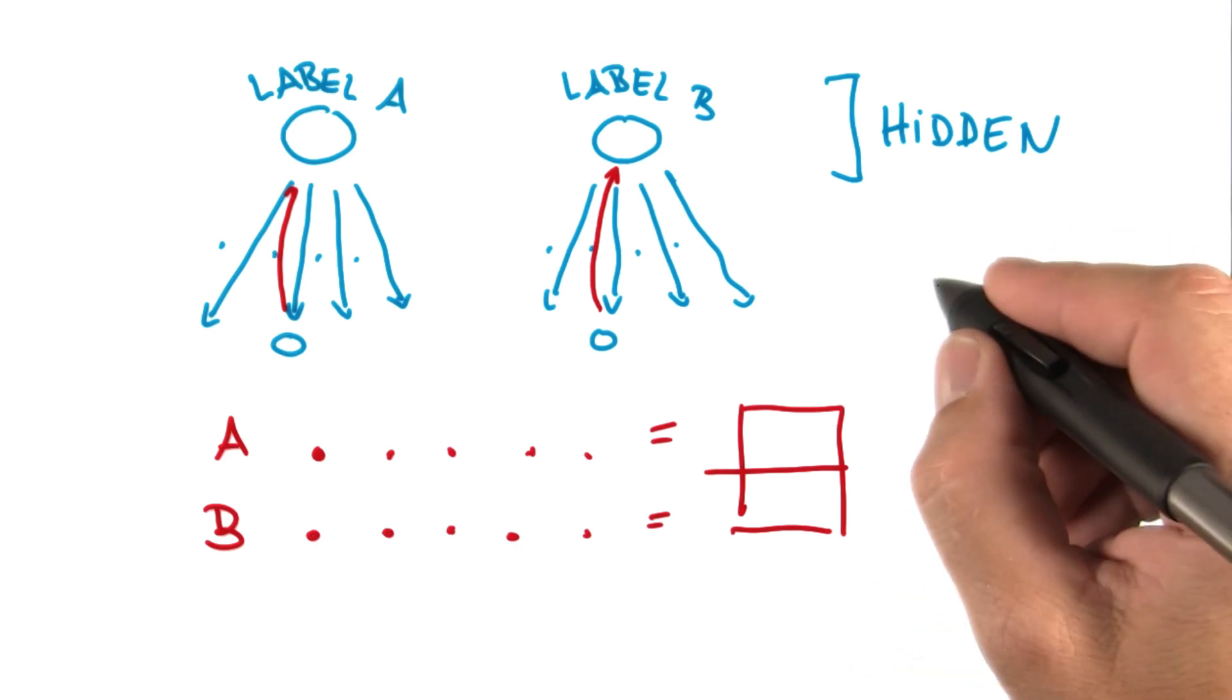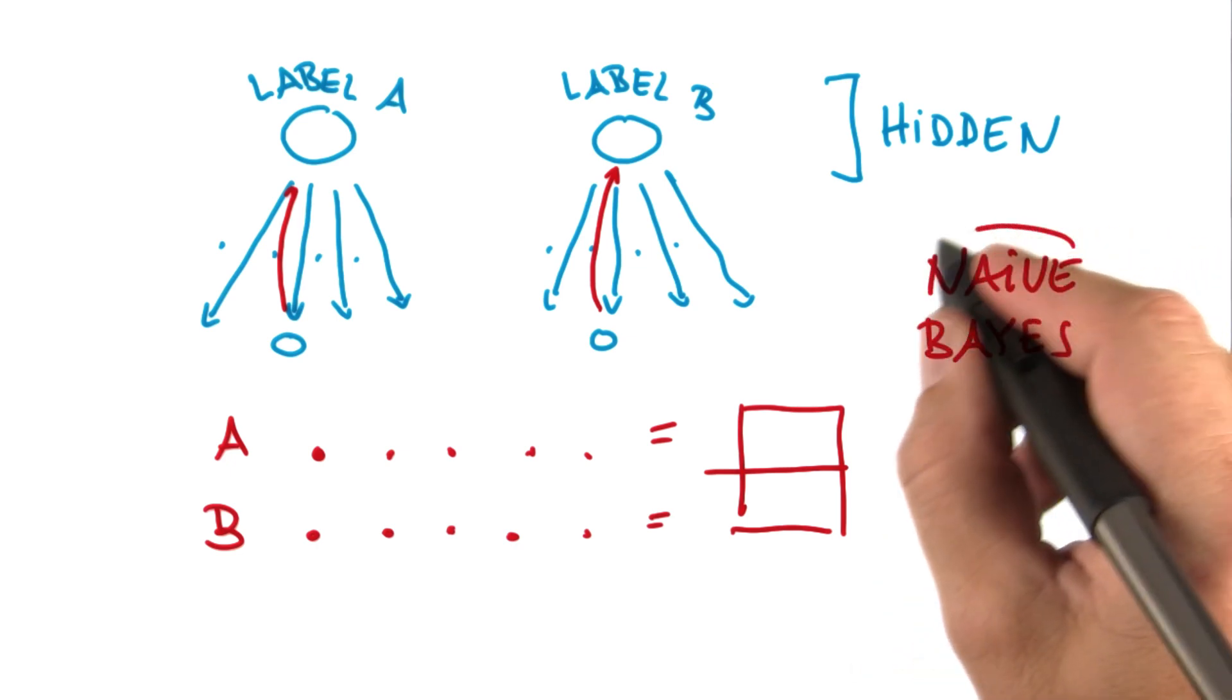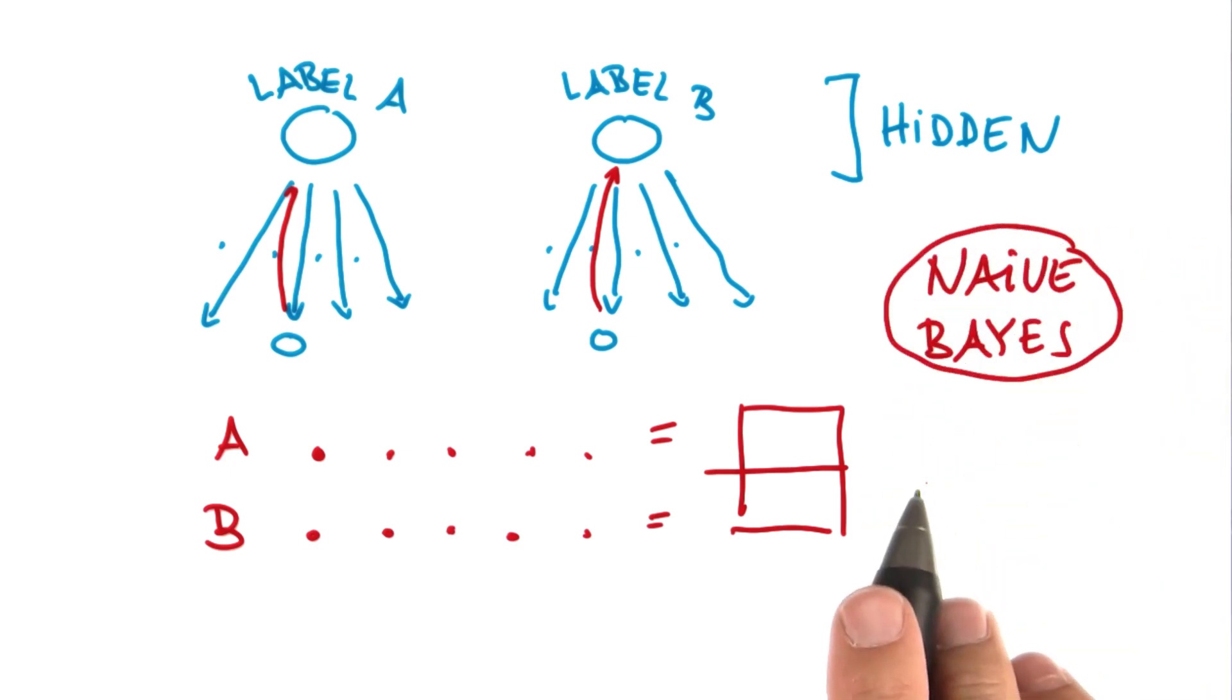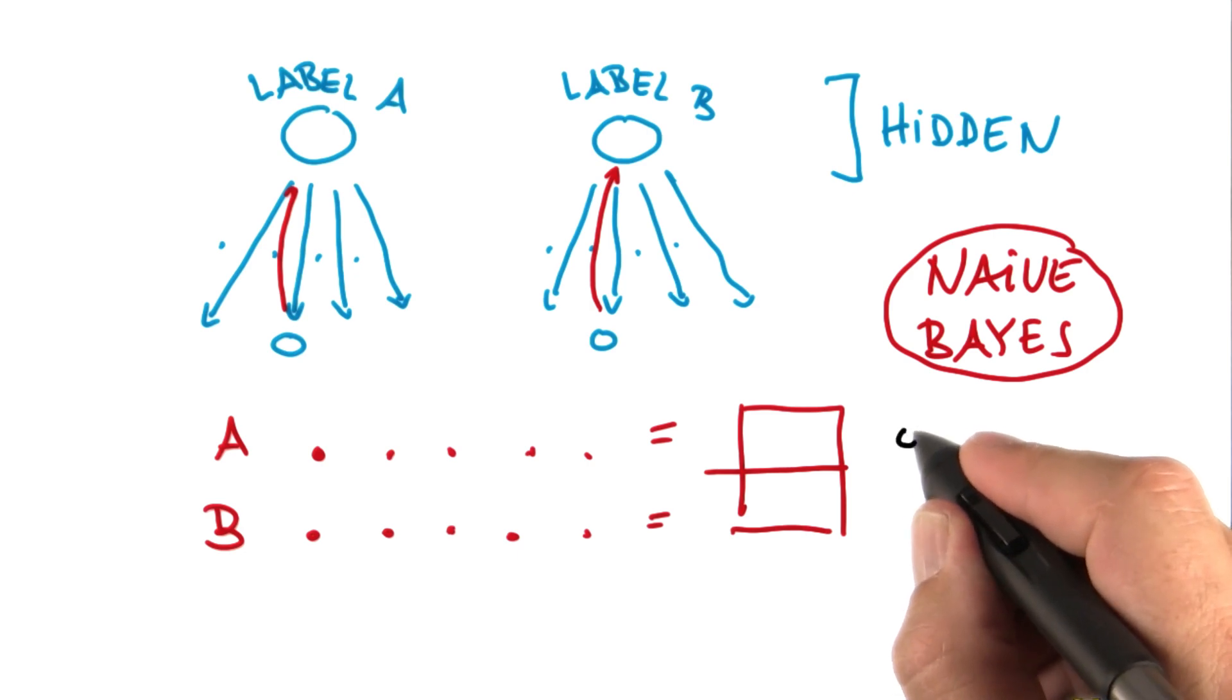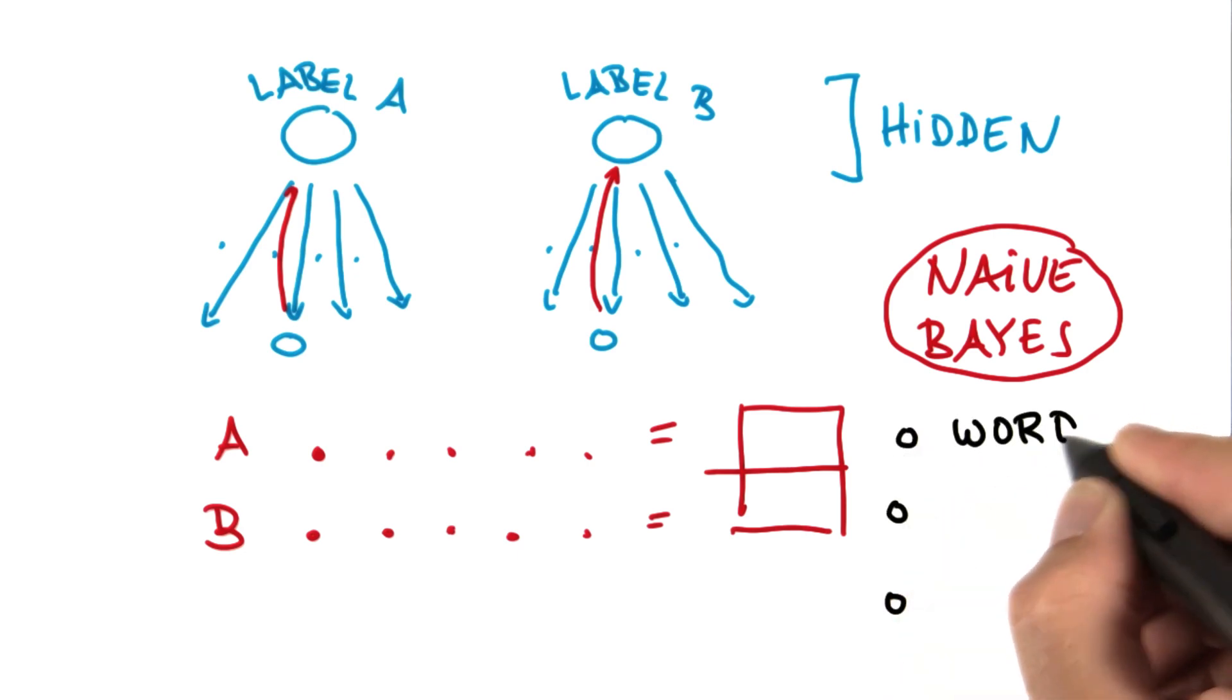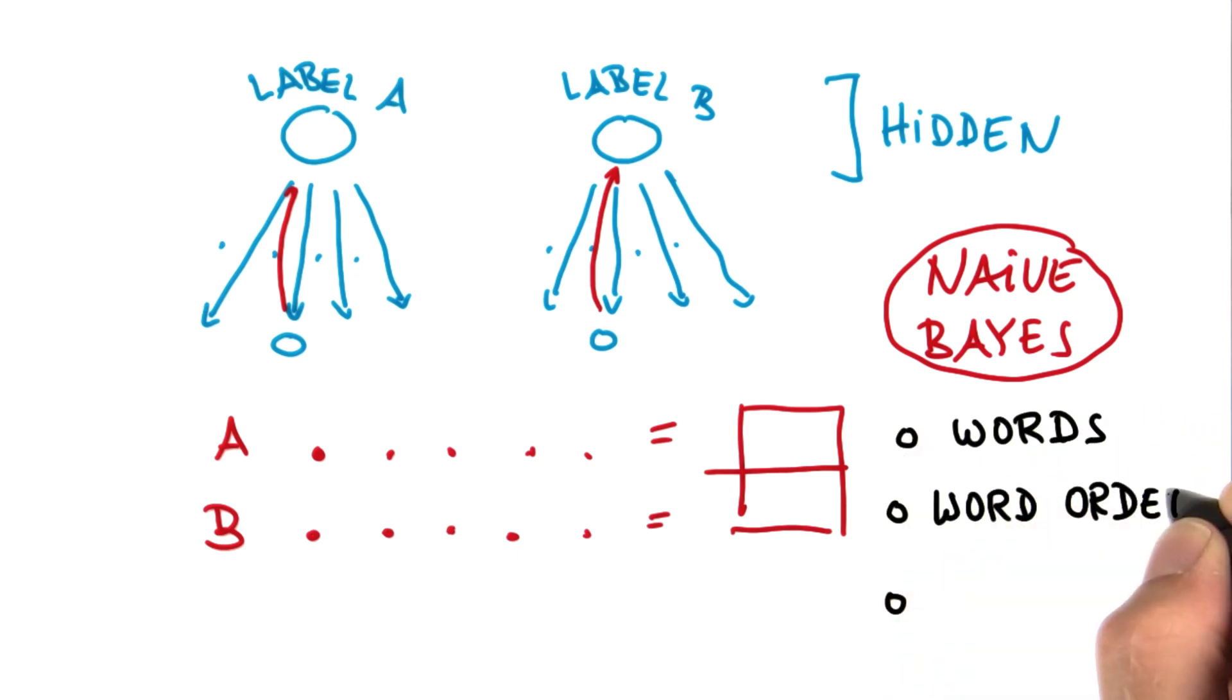And the reason why it's called naive is because it ignores one thing. And you tell me which one it is. All the individual words in a message, the order of the words inside a message, or the length of the message, which one is being plainly ignored here.